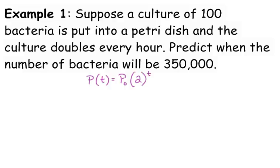You have to be careful with your units with the t. Let's fill in the pieces here. A hundred bacteria is our P₀, our initial population. Predict when means t is what we're looking for—t is our variable. The number of bacteria will be 350,000. That is our population at some time t, the left side of this equation.